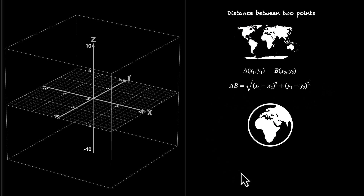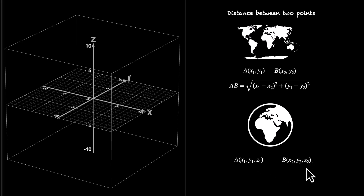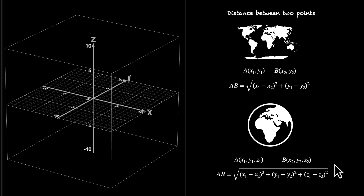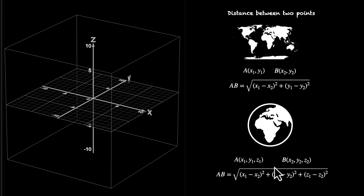We can do the same thing in 3D. If the two points are A and B, where the coordinates are (x1, y1, z1) and (x2, y2, z2), adding the third coordinate because of the third axis, the distance AB becomes the square root of (x1 - x2)² plus (y1 - y2)² plus (z1 - z2)². This third term gets added; the rest remains the same.